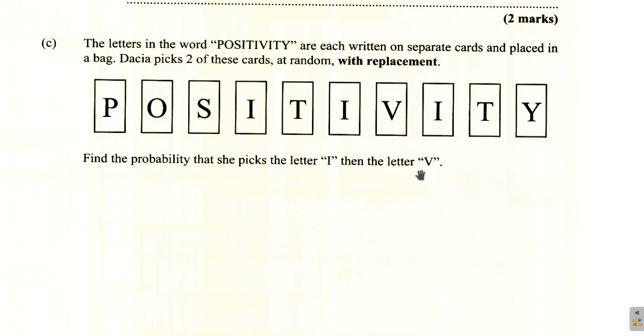We're looking at part C of question 5 of the May 2024 CSEP Mathematics paper. It says here, the letters in the word positivity are each written on separate cards and placed in a bag.